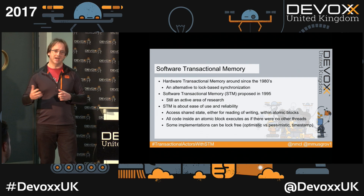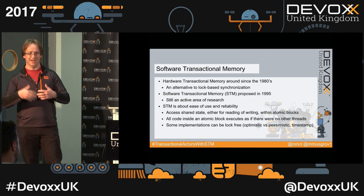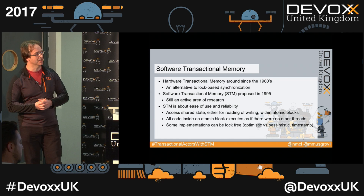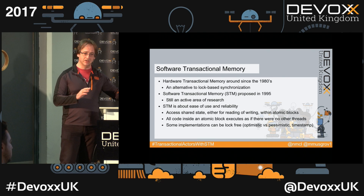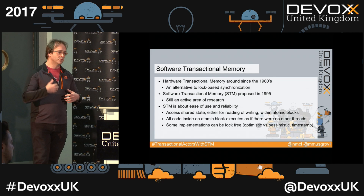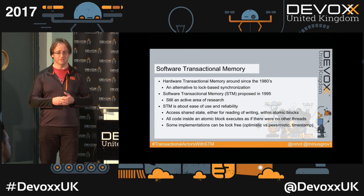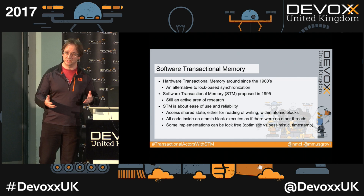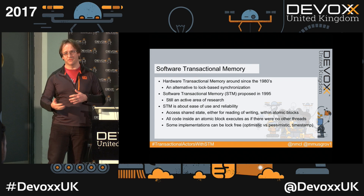All code inside software transactional atomic blocks is serial — no other threads can access the state being accessed within those blocks if they conflict. Some STM implementations support locks for concurrency control, while others use timestamp-based concurrency. They can also support optimistic and pessimistic modes. Some of this should be familiar to anyone who has used transactional systems over the last few decades.